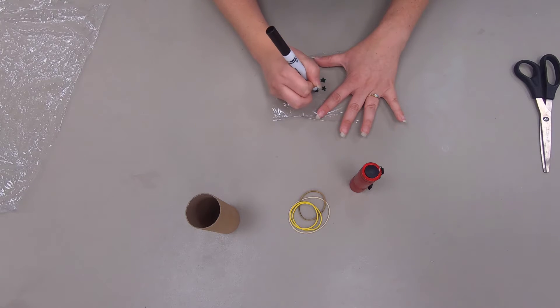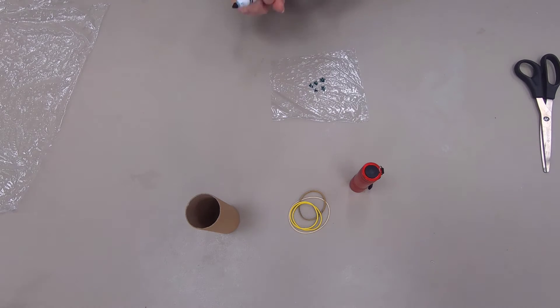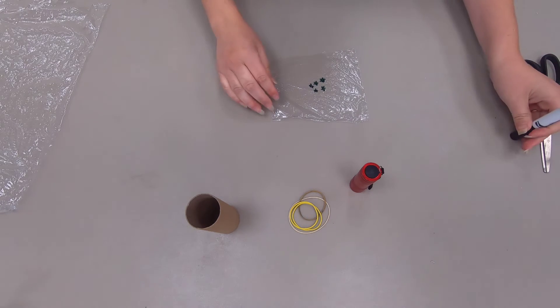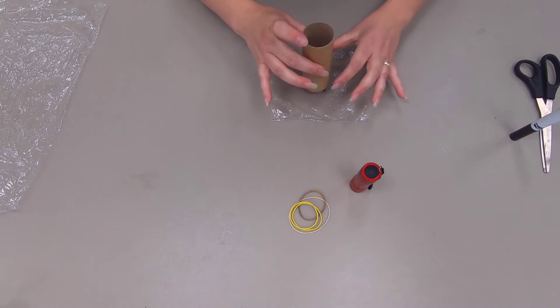Or you can always do the good old one, two, three, four, five. Let's get a couple of those. So now I have a couple of star shapes on my cling wrap.